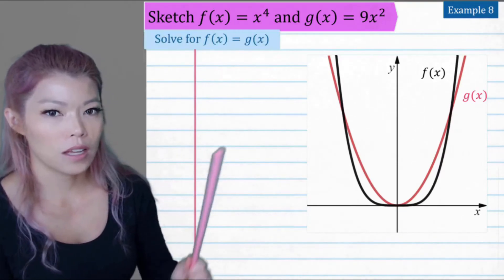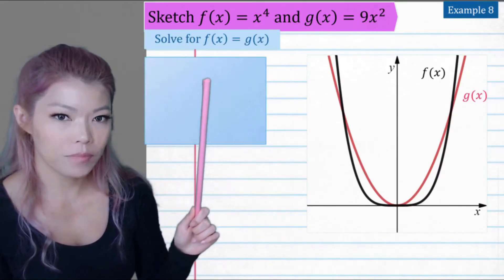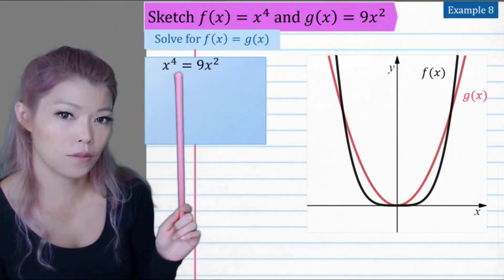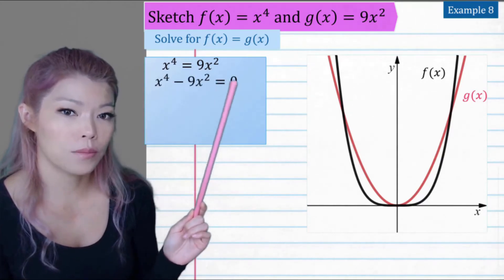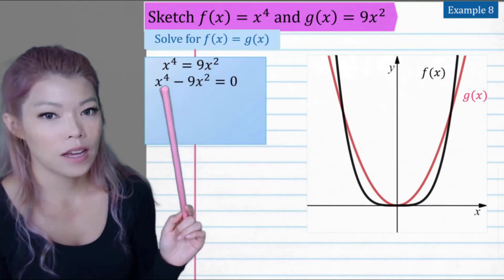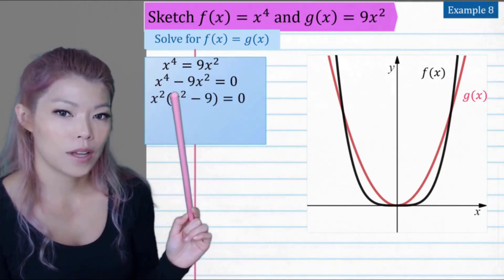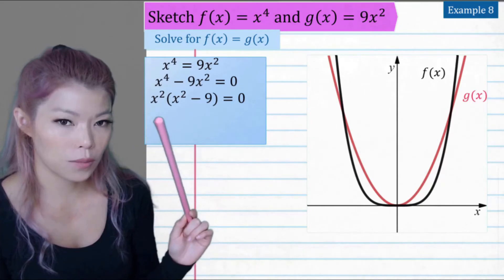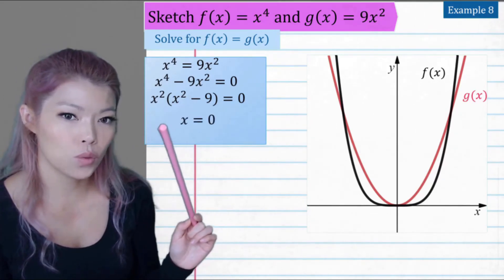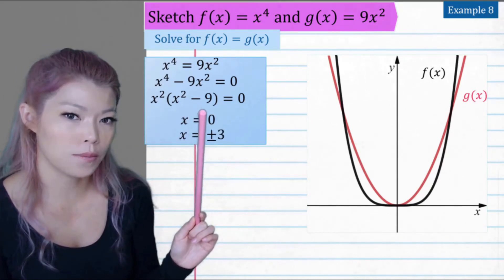So let's do that, where they are the same. So f(x) is x to the four equals nine x squared. Bring the nine x squared to the left. Find the highest common factor, which is x squared. Now we have x equals zero. That's where the turning points are. And then difference of two squared means x equals plus or minus three.